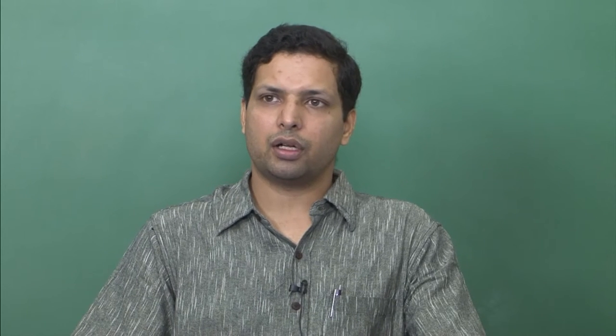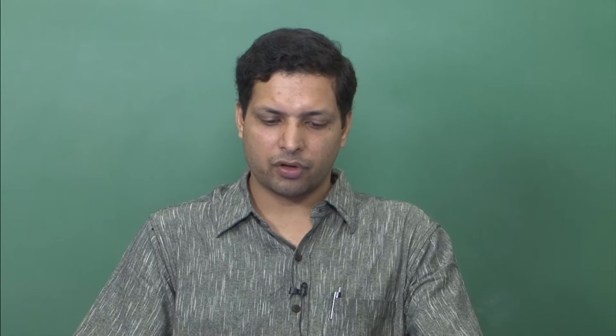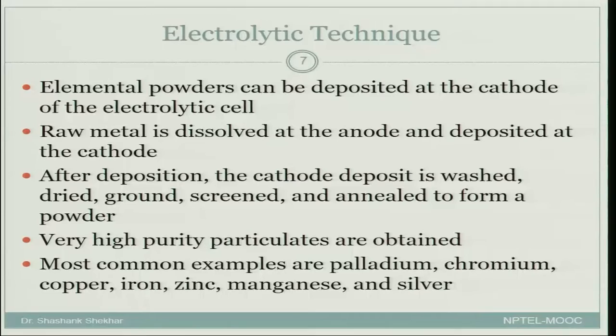We discussed the mechanical method for fabricating powders. Today we will look at some other methods, and the first method we will look at is the electrolytic technique. It is a simple electrolytic cell — you have a cathode and anode.